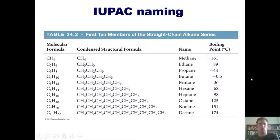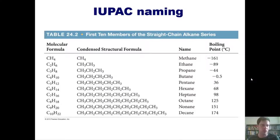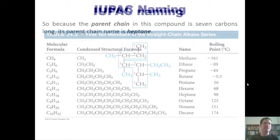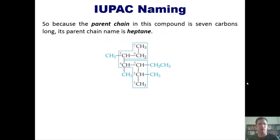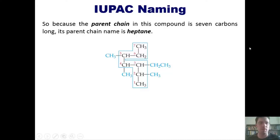Students taking this class are required to memorize these names and the number of carbons they correspond to — yes, it is mean, but I have the power to put questions about it on a test. Because the parent chain in our example compound is seven carbons long, its parent chain name is heptane.